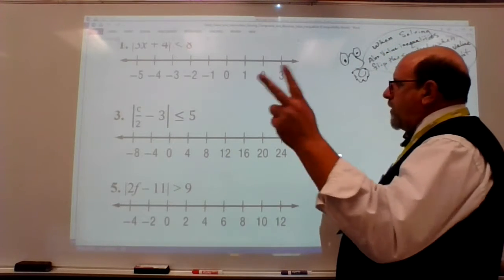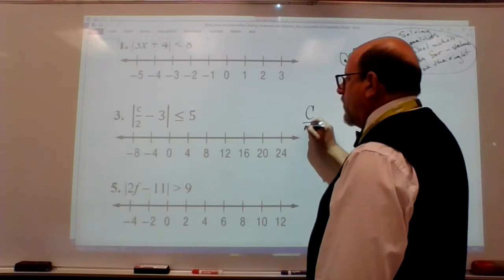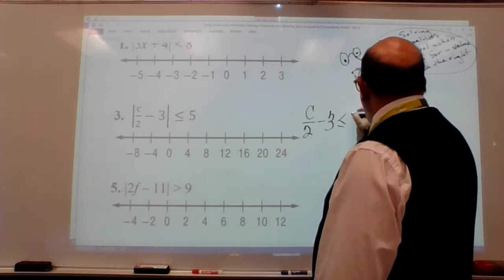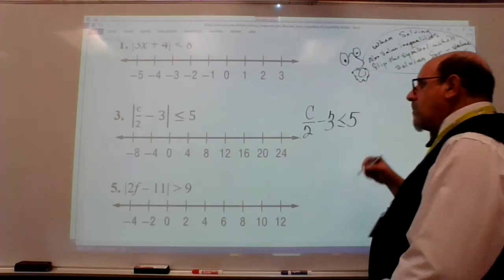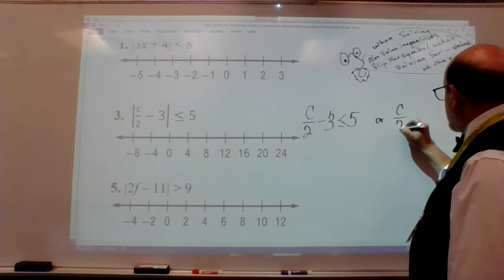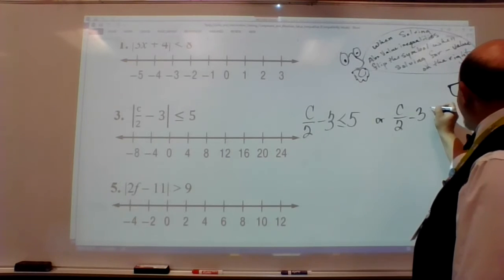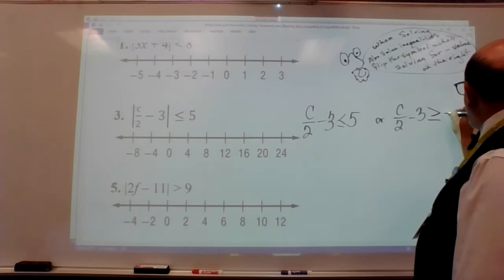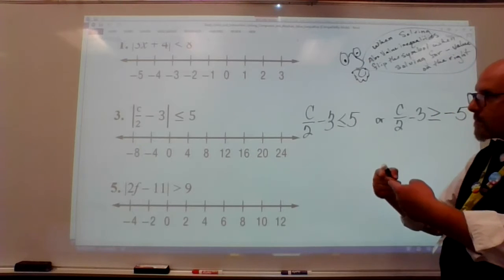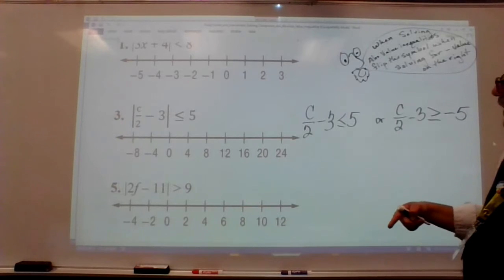I'm going to solve two different inequalities. I'm going to solve c/2 - 3 ≤ 5. And I'm also going to solve or c/2 - 3 ≥ -5. Hey, look at that. We're probably going to have an and. Here we go.